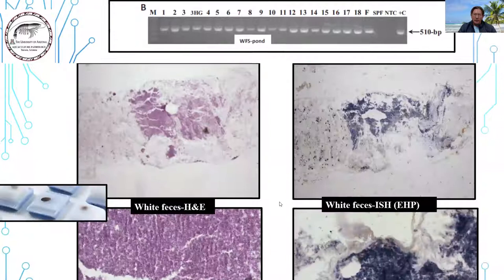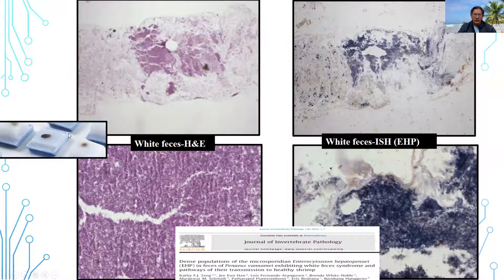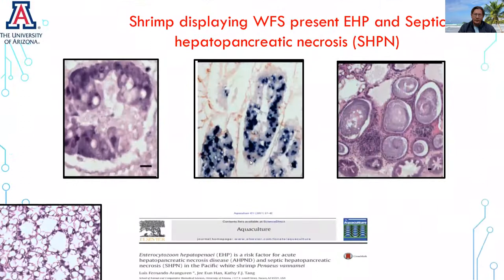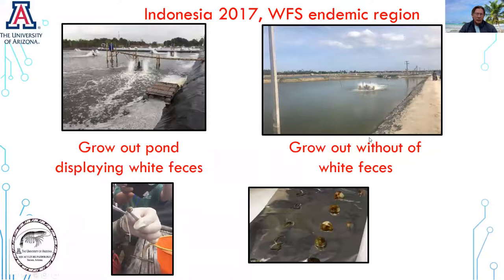We also took samples of the fecal strings, did paraffin blocks with the fecal strings, performed histopathology, and later on did in-situ hybridization. All samples of fecal strings floating on the grow-out pond were positive for EHP. Not only was EHP found in the animals displaying White Feces Syndrome, but we also found secondary vibriosis — basically what is called septic hepatopancreatic necrosis, usually caused by opportunistic vibriosis.